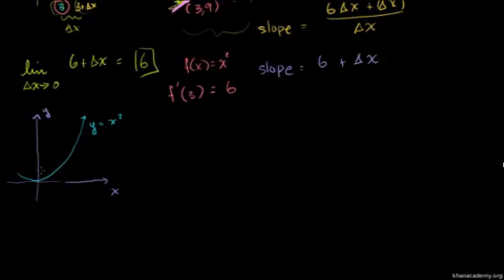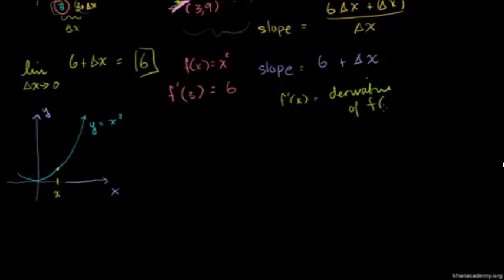So let's be very general right now. If we want to find the slope at the point x, we want to find a function where you give me an x and I'll tell you the slope at that point. And we're going to call that f prime of x — that's going to be the derivative of f of x.